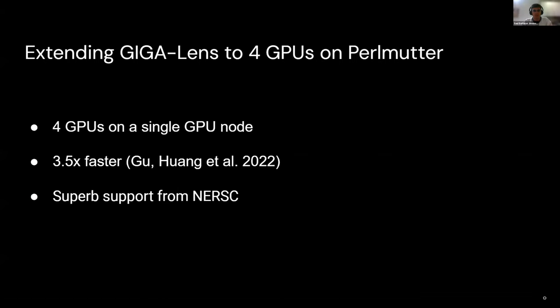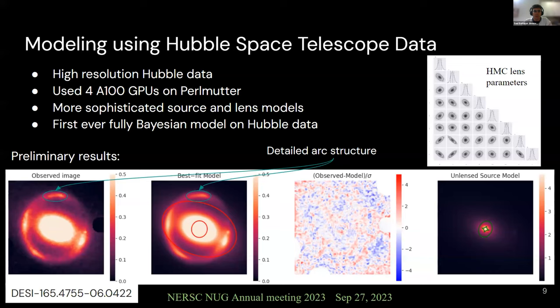For more complex models, we need more computational power. With superb support from the NERSC team, we were able to set up a Conda environment based on JAX that allowed all users to use four GPUs within the GigaLens framework. The estimated improvement in modeling time is 3.5 times faster. With this step forward, we were able to model the system I'm going to introduce next. I'd like to remark that this is a preliminary result, but it is close to being published.